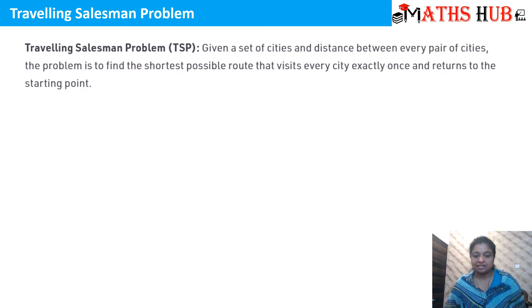We are given a set of cities and the distance between every pair of cities is given to us. We need to find the shortest possible route that visits every city exactly once and returns to the starting point.